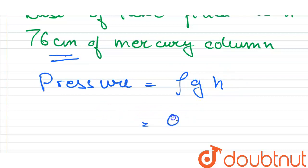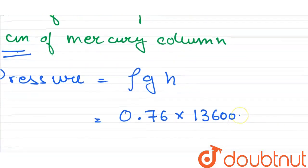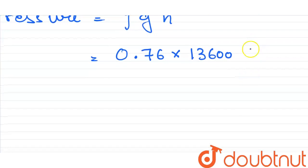13,600 kg per meter cube. Then gravitational acceleration is 9.8. So upon solving this we will get pressure as 101,325 Pascals.